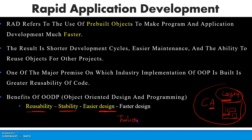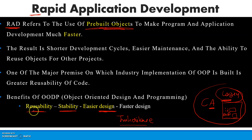The third point is that one of the major premises of industry implementation is greater reusability of code. This is essentially the concept of inheritance — something is already there and we are using it. So Rapid Application Development is the concept in which we use pre-built objects. The benefits are: reusability, stability, easier design, and faster development.